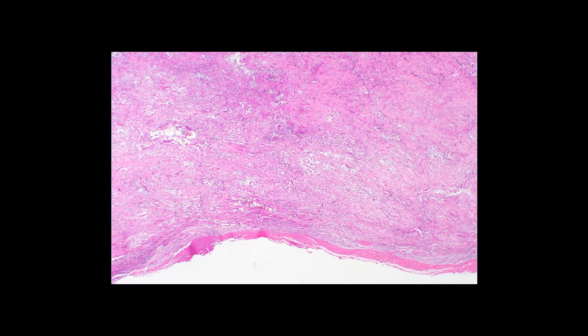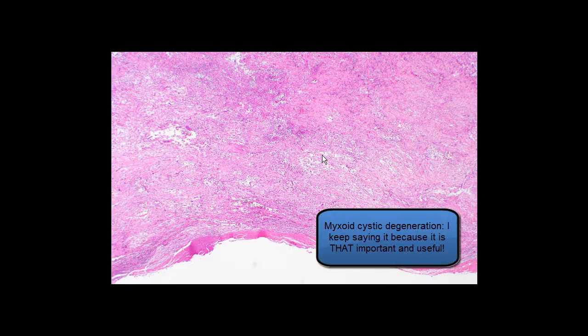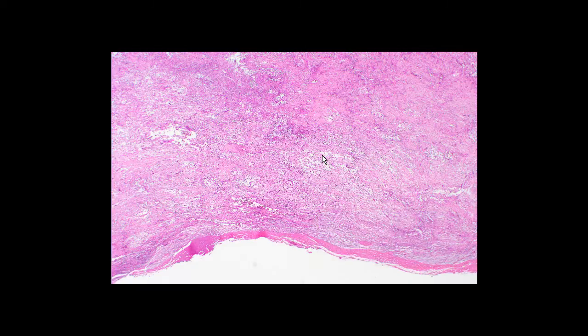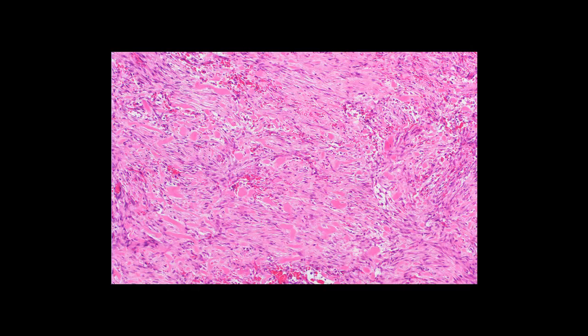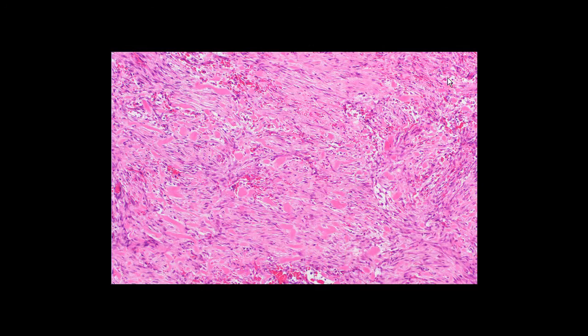Here's one final example of nodular fasciitis. You can see this dense pink layer at the edge of the proliferation — this is fascia, and from the fascia the nodular fasciitis is arising. Again, you can appreciate the myxoid cystic breakdown, which we've seen in every example today. In this case, the background is very pink and fibrotic. At higher power, you can see a very collagenous background with dense keloidal collagen bundles, small myxoid cystic spaces, and abundant extravasated erythrocytes.